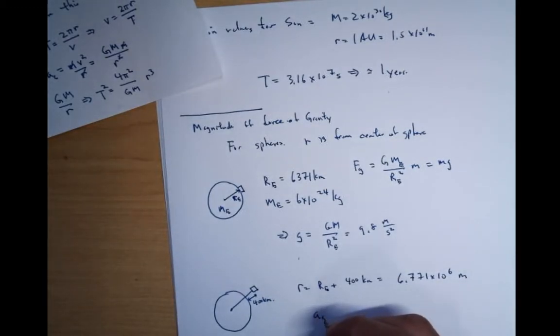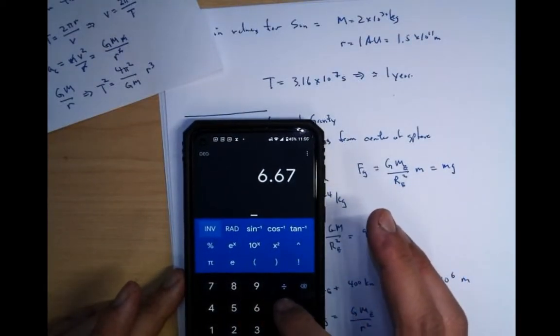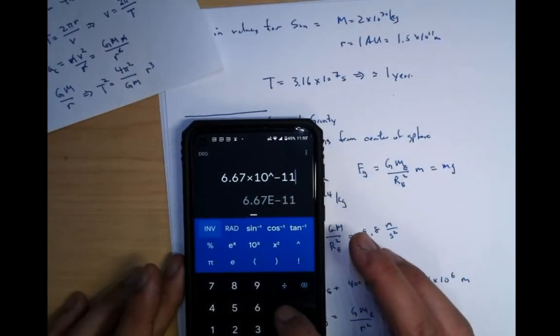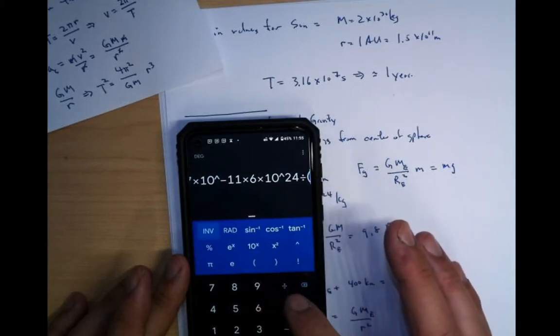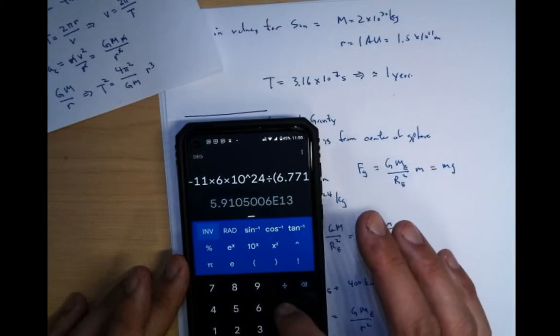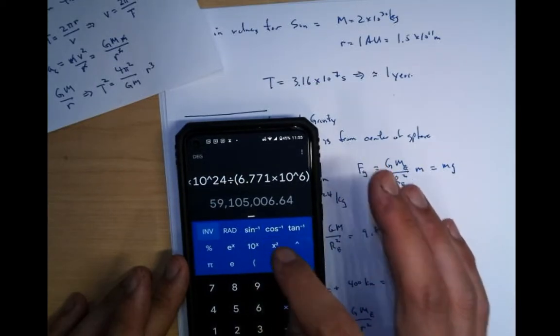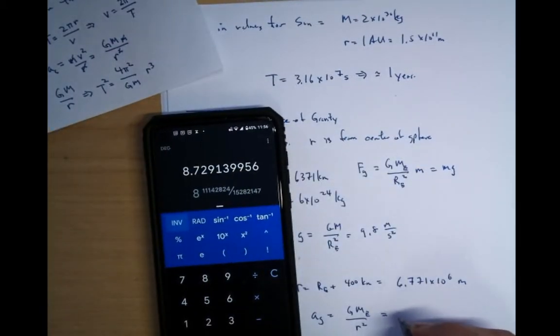Let's go ahead and compute the acceleration of gravity for a satellite. g m e over r squared. So let's compute that again. 6.67 times 10 to the minus 11 times 6 times 10 to 24. Divide by, now this one is 6.771 times 10 to the 6th. Close that squared the entire thing. There we go. Now it's 8.7. 8.7 meters per second squared.